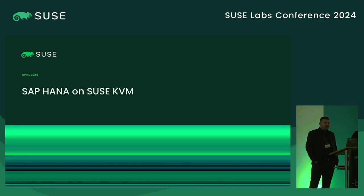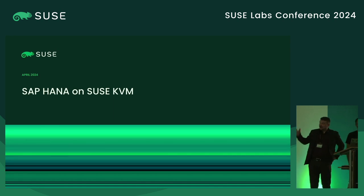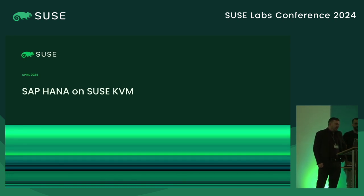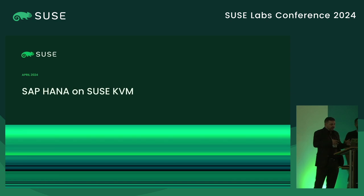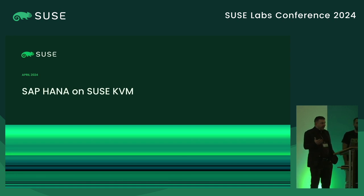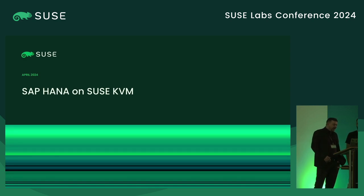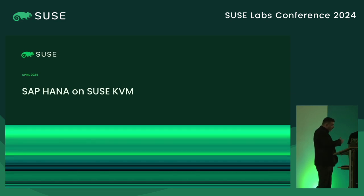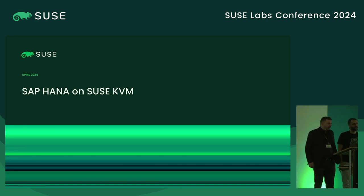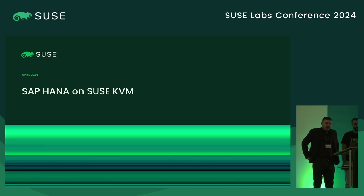Good morning and welcome everybody. Thank you for participating in this session. The session is about SAP HANA on SUSE KVM and our efforts around that topic. I will give a short overview on what we're doing and why we're doing it, and also the scenarios that we can cover with the validations around SAP, around the hypervisor validation. Dario afterwards will talk about the deeper configuration technicalities of a virtual machine and how we transport as much performance through the abstraction layer.